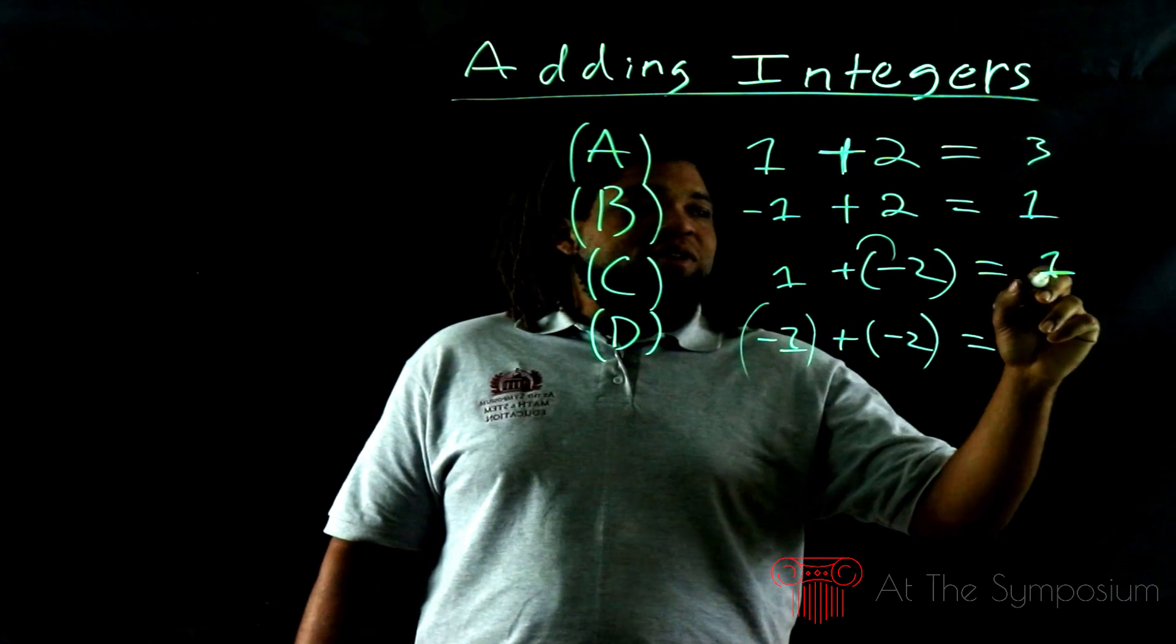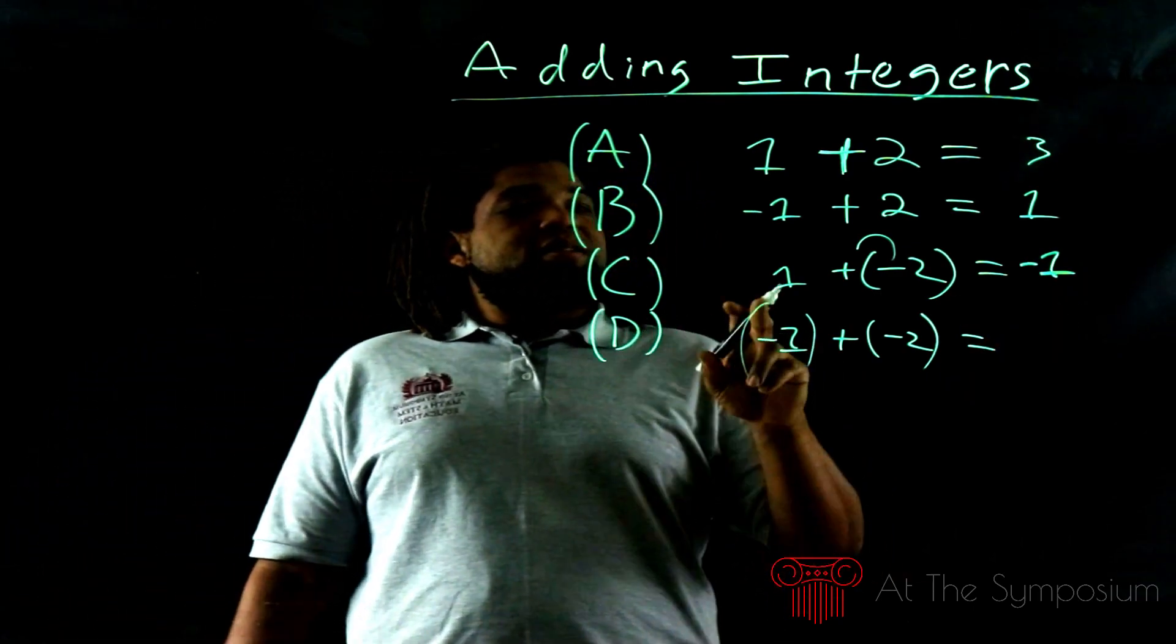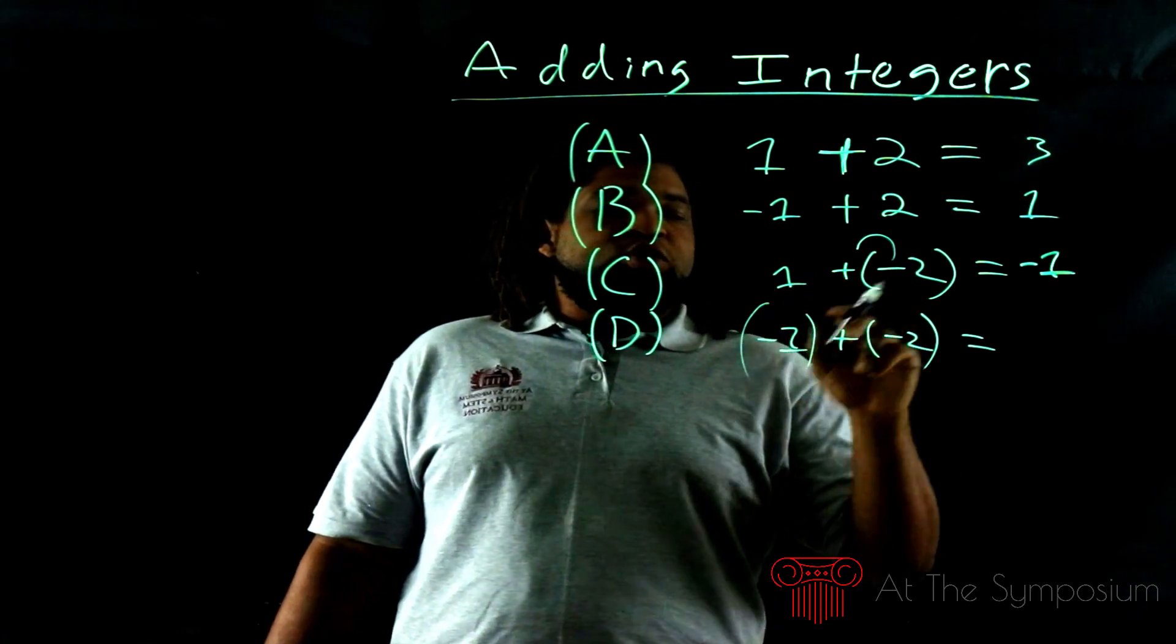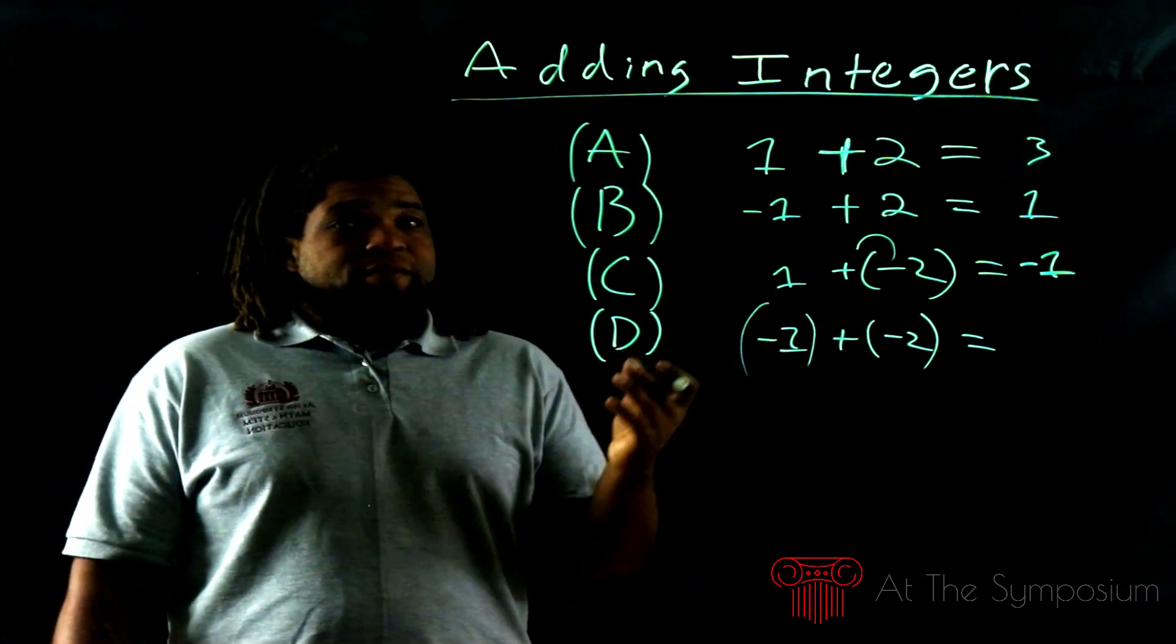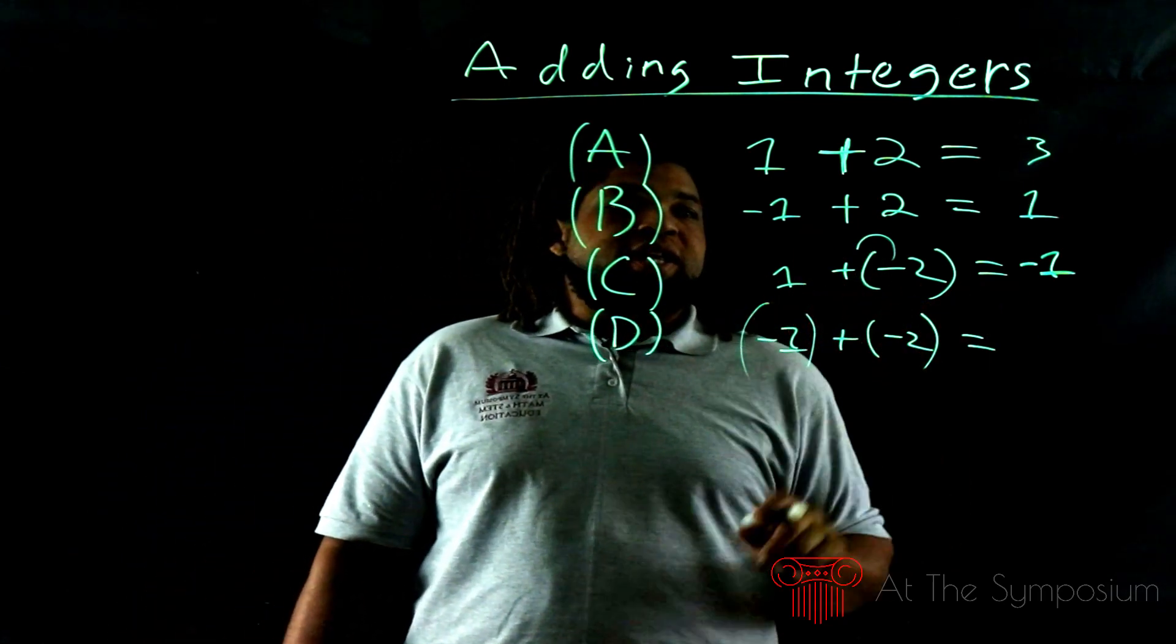And 1 - 2 is going to give us -1. Why is it going to give us negative 1? Because the number in front is smaller than the number we're subtracting by. If the number in front is smaller than the one that we're subtracting by, it's going to give us a negative result.